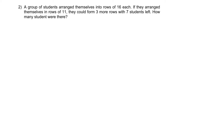Question 2. This is a fairly common question. A group of students arrange themselves into rows of 16 each — that means every row has 16 students. If they arrange themselves in rows of 11, they could form 3 more rows with 7 students left over. How many students were there?